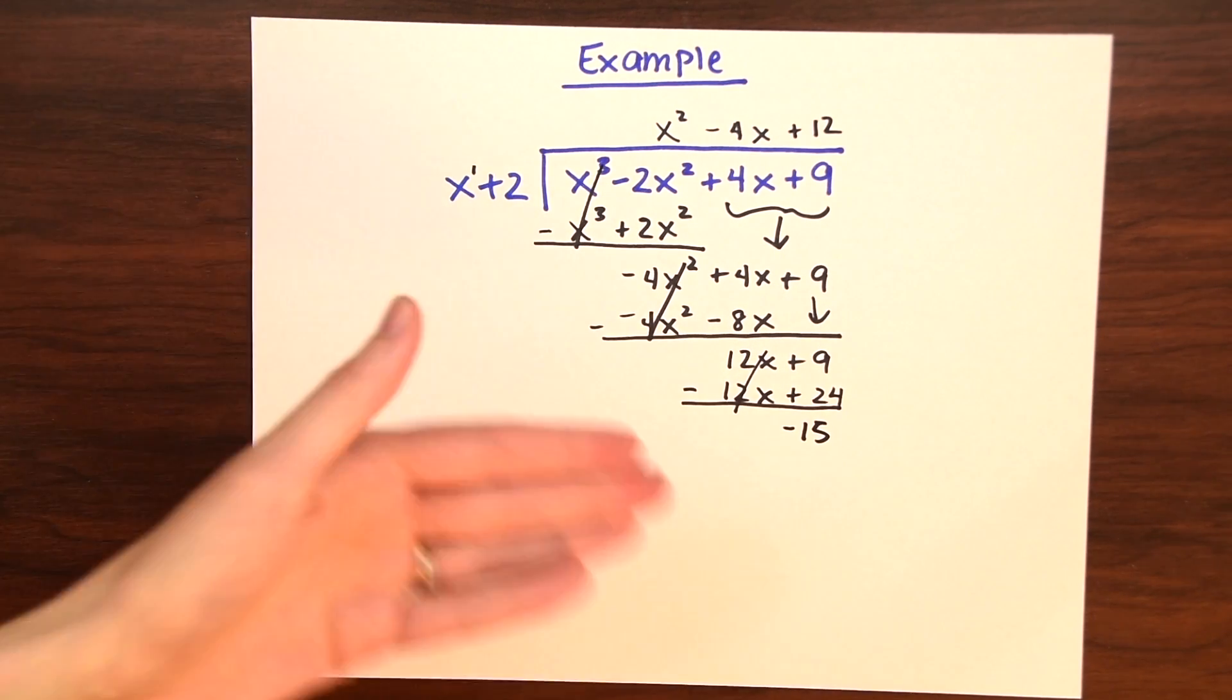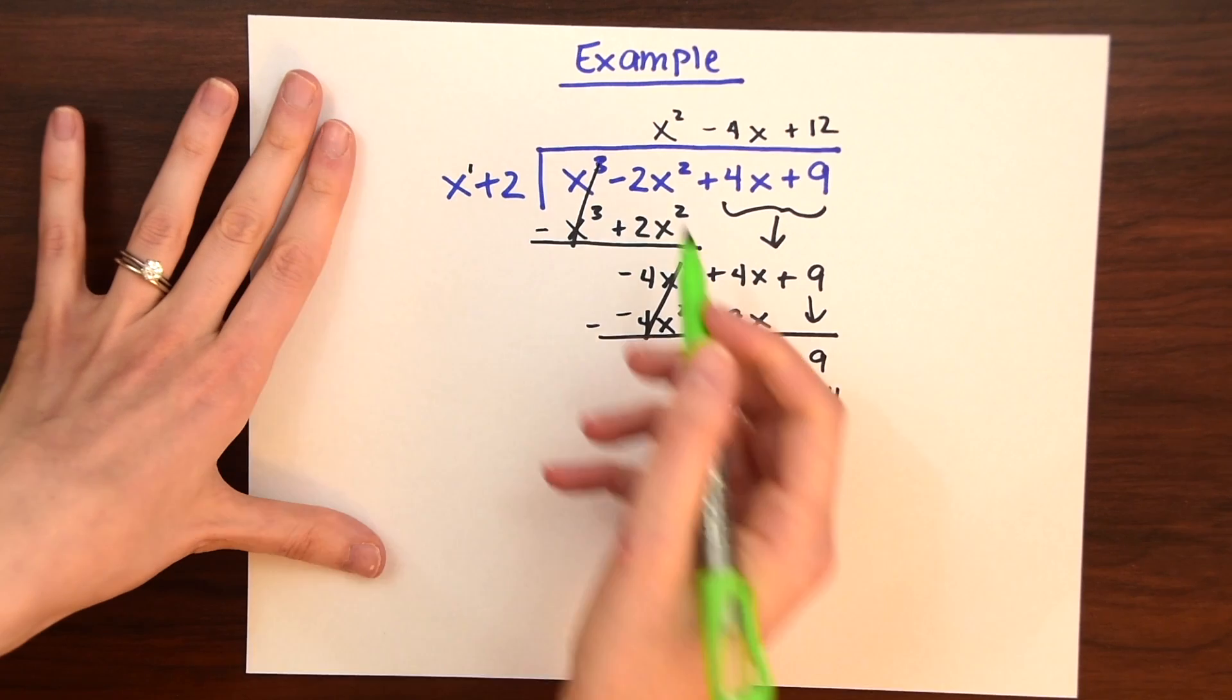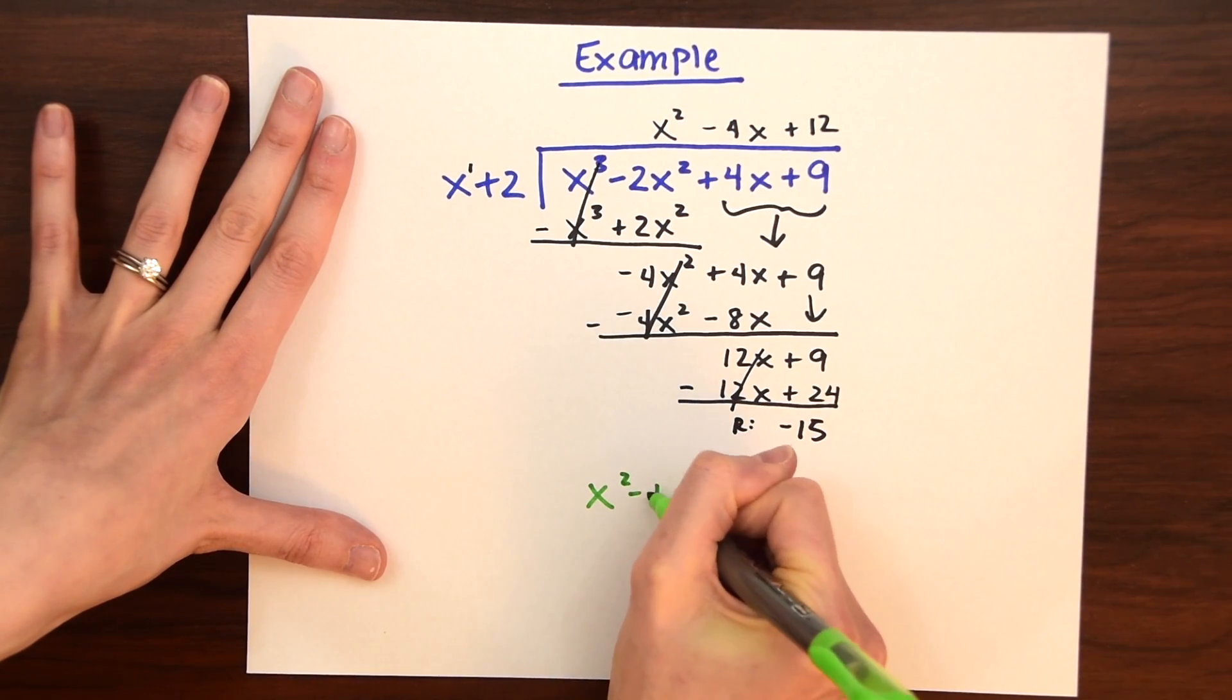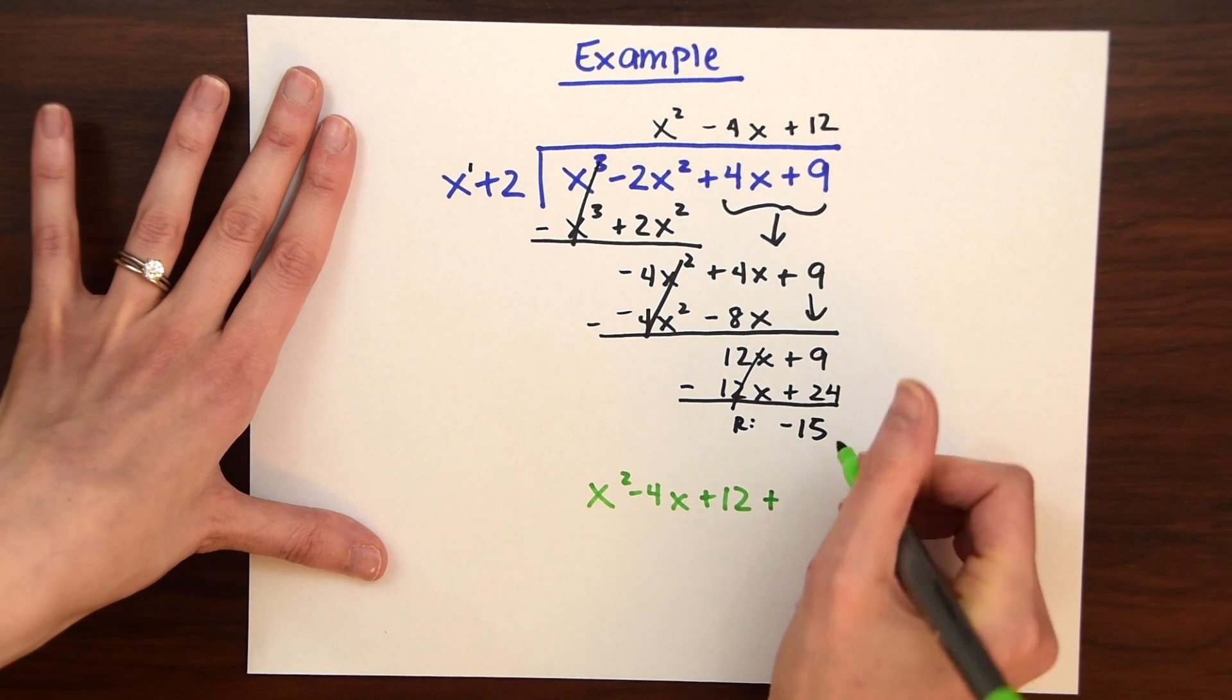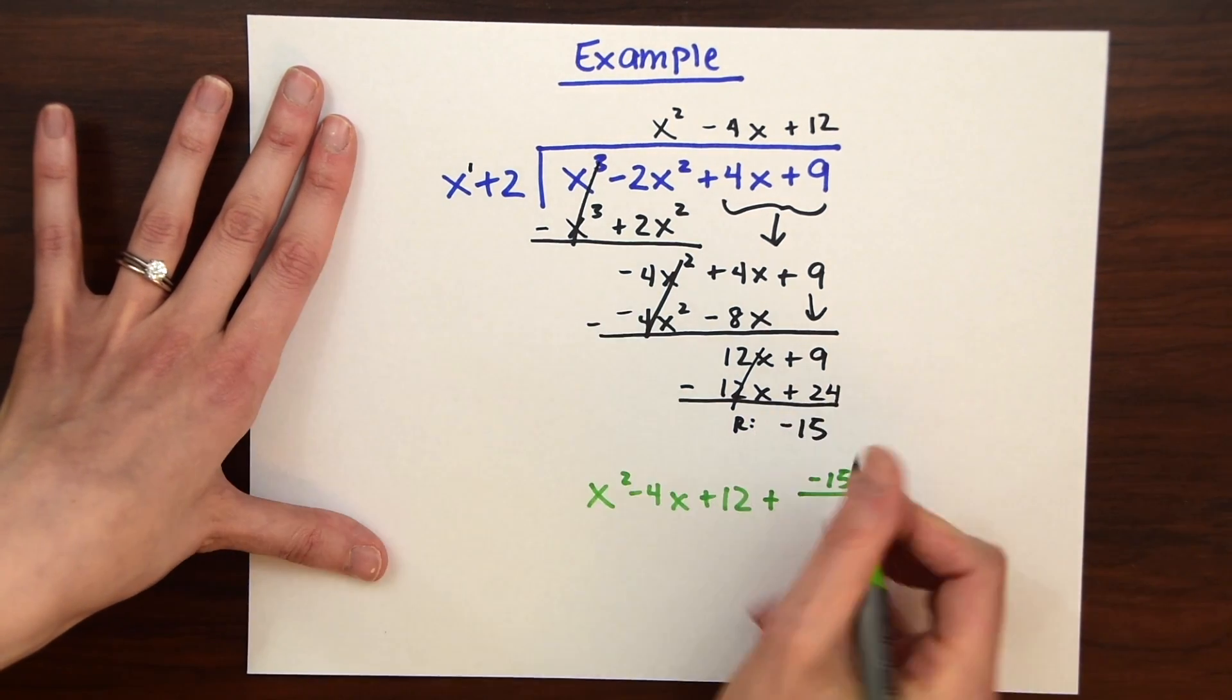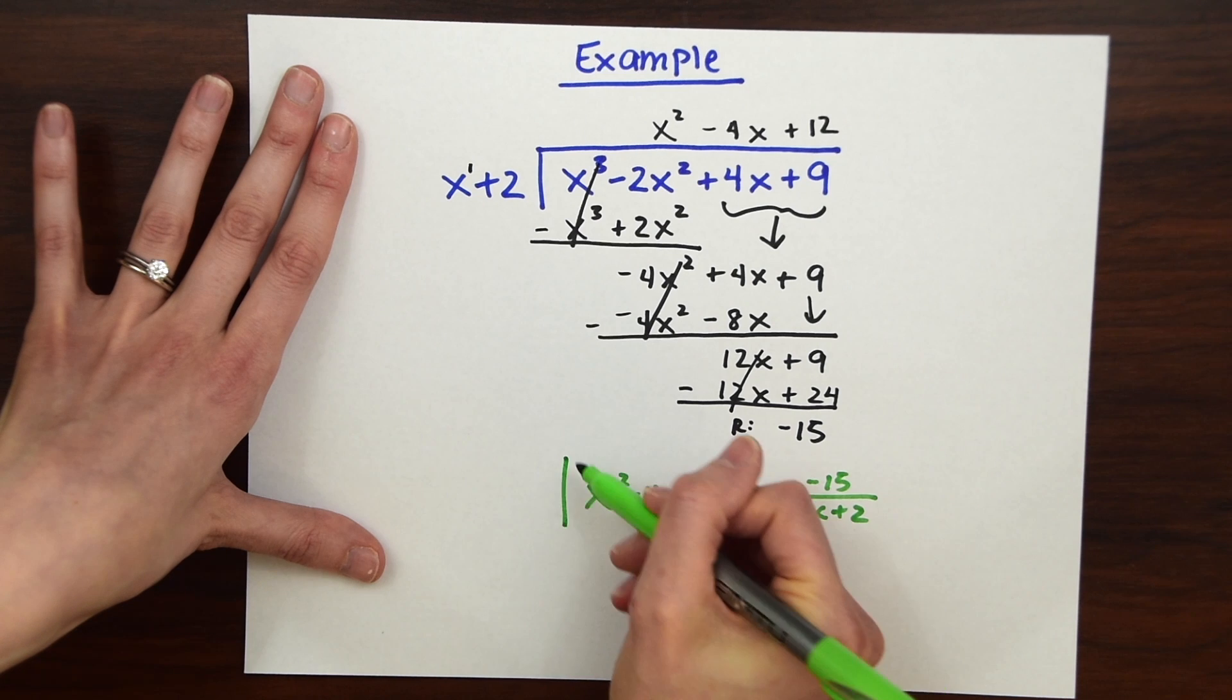So when we're left with the remainder here of negative 15, in order to show that in the solution, we have the solution, the quotient up here: x squared minus 4x plus 12. And then now we need to represent this remainder. And to do that, we're just going to add and then make a little fraction. So minus 15 over x plus 2. Because really, this is negative 15 divided by what's ever left of x plus 2. And that's our answer.